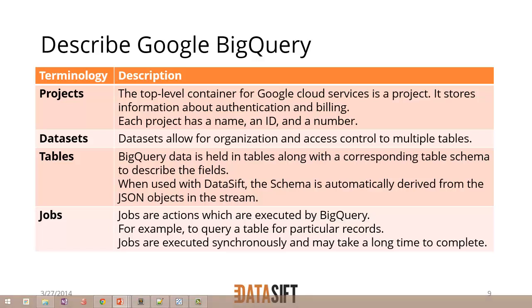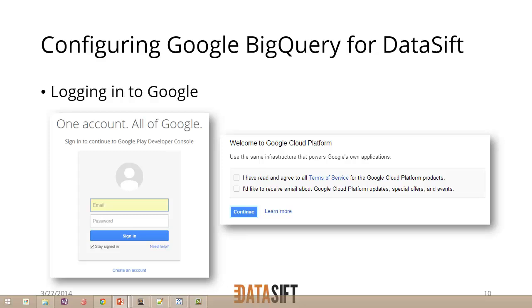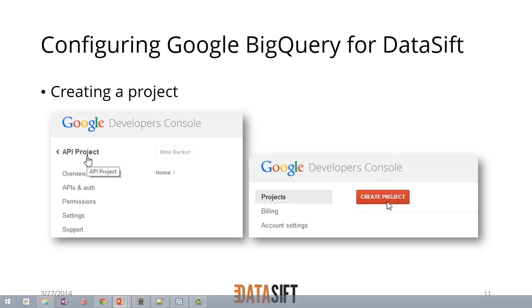The first part is configuring Google BigQuery with the appropriate configuration for DataSift to be able to send the data into it. The first step would be logging into Google — you need a Google account. You can go to cloud.developers.google.com, and in the cloud platform you have to agree to certain terms and conditions first. That takes you to a point where you can then create a project. There's a default project called API Project which we're not going to use. You can click on the API Project name and that takes you to a screen where all the projects are listed and you can create a new one.